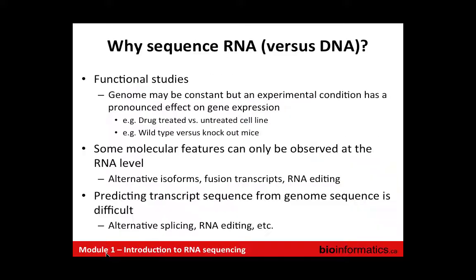For microRNA sequencing, you might use the same underlying aligner. You might do okay with TopHat, but you're probably better off using Bowtie directly, which is what TopHat uses for alignment. Much of TopHat's algorithmic complexity involves finding splice junctions — where exons start and end and where introns are interspersed — which doesn't apply to microRNAs. So a different alignment strategy would be better for microRNAs.